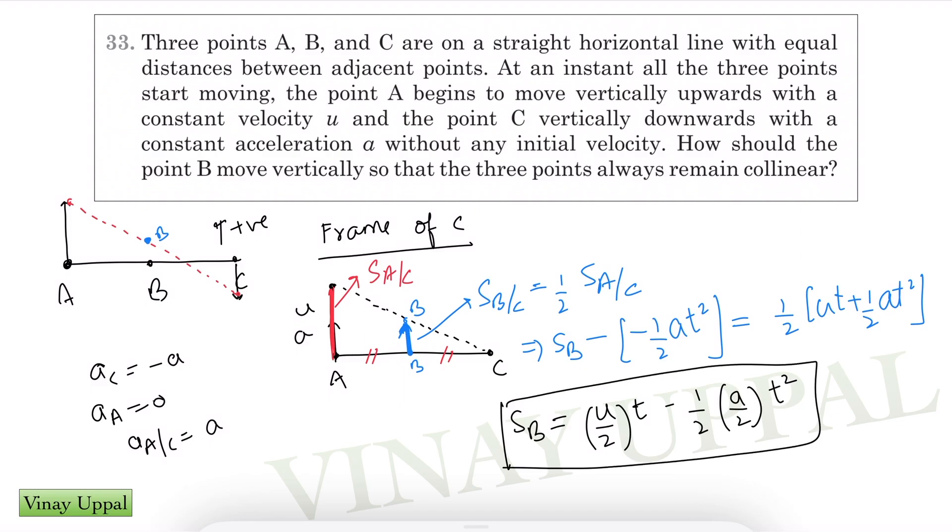This is the displacement of B as a function of t, which is what I want. Basically what that physically means is that B is moving upwards with an initial velocity of u by 2 and a deceleration of a by 2. That means its initial velocity is u by 2 upwards, but acceleration is a by 2 downwards. So that's your answer.